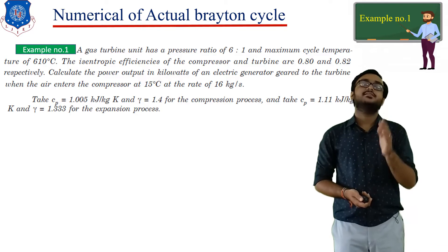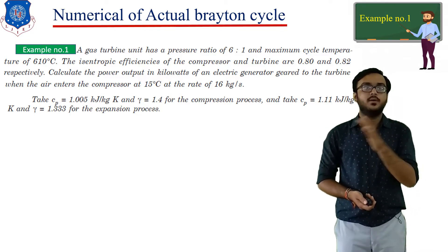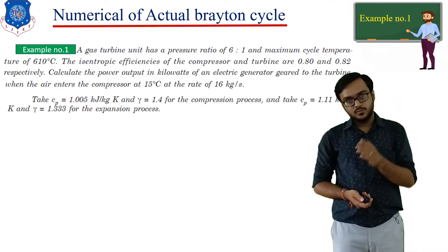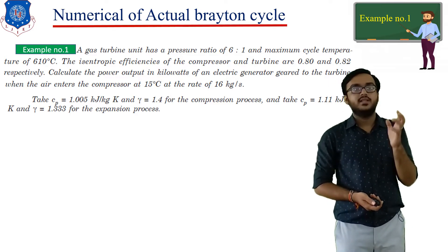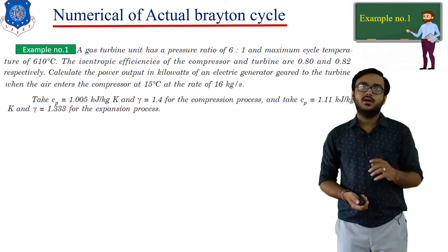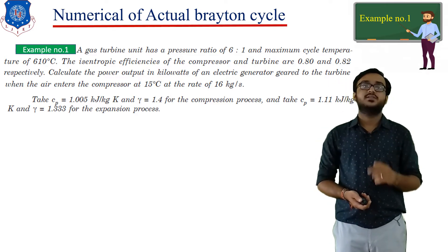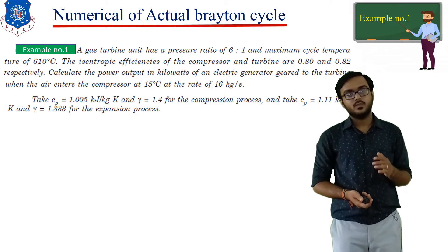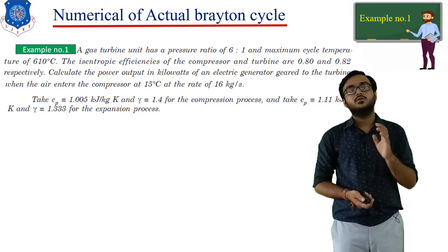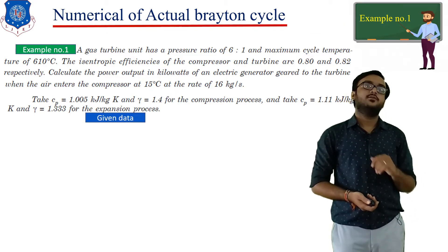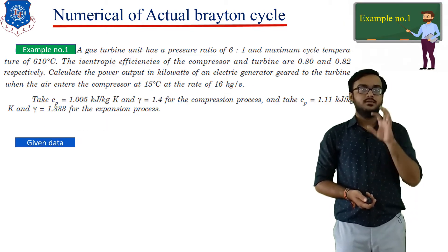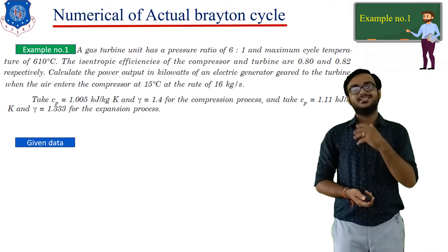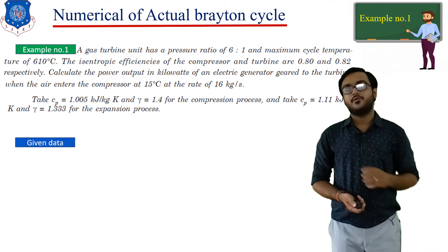The value of Cp is 1.11 kJ/kg·K, and the value of gamma is equal to 1.334 for the expansion process. For the given data, we need to find the power developed by the turbine which is geared to the generator.